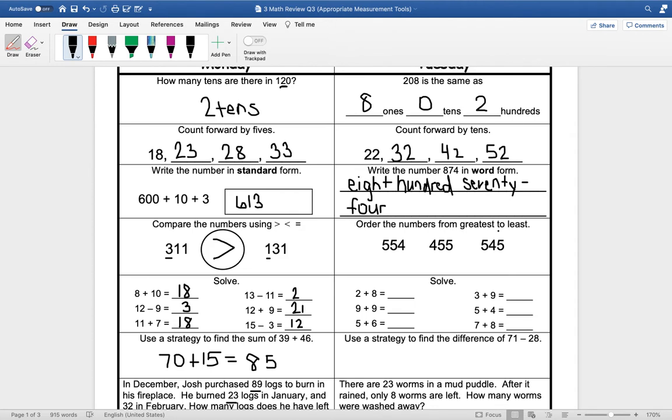All right, order these numbers from greatest to least. So let's look at our hundreds place. We have five hundred, four hundred, and another five hundred, so we need to look at these two and go to our tens. This one we have five tens and this one we have four tens, so this one would be the greatest, this one would be next, and this one last.